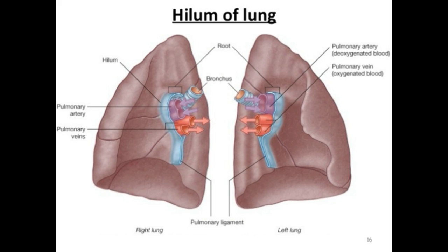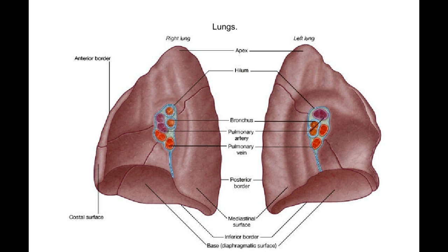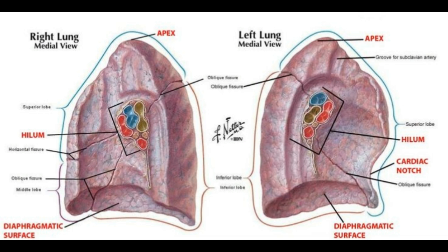The hilum of the lung is the root's point of attachment to the lung. The area surrounding the hilum of the lung is called the perihilar region.